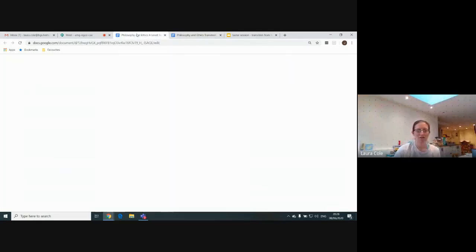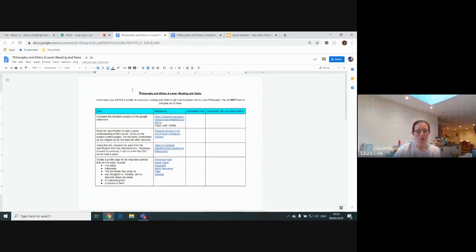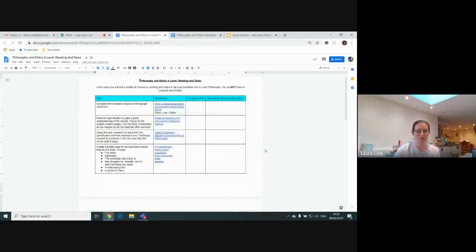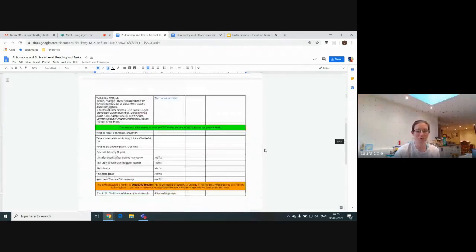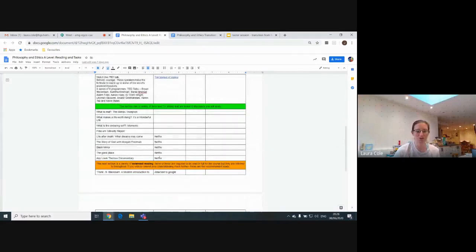The other task that you've got, which is an optional task, you don't have to complete all of these but I would recommend you try and do some of them. First complete the transition project which is what I've just shown you. You've then got all sorts of different tasks that you can work through. Some of them involve watching documentaries on Netflix, some are more in-depth reading.